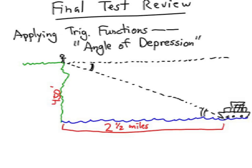That means if someone was on the ship looking back up at the person on the cliff, the angle that they are looking up is the same as the person on the cliff looking down. And that's because of the parallel lines there. Those are alternate interior angles.